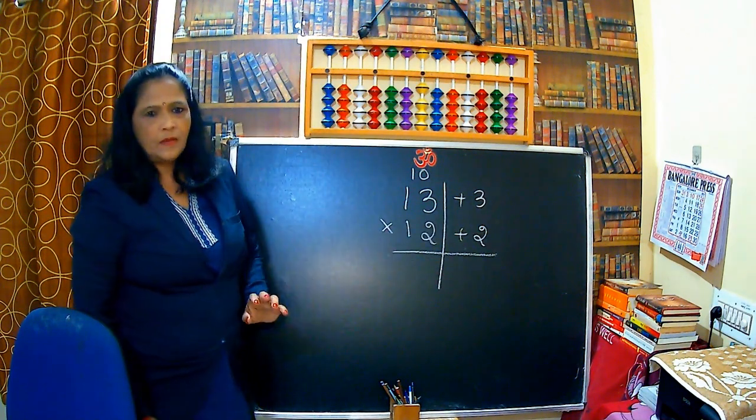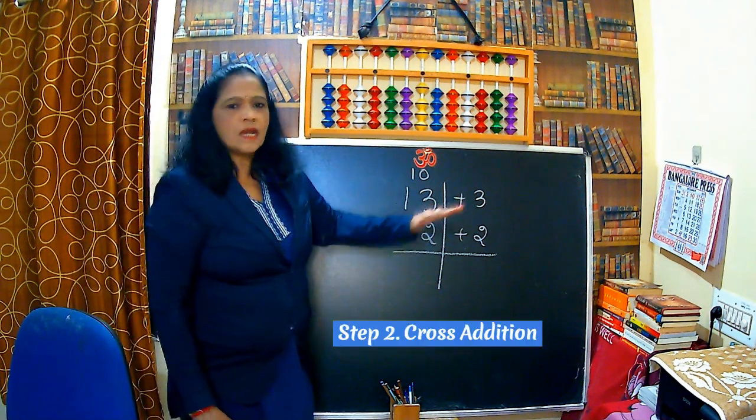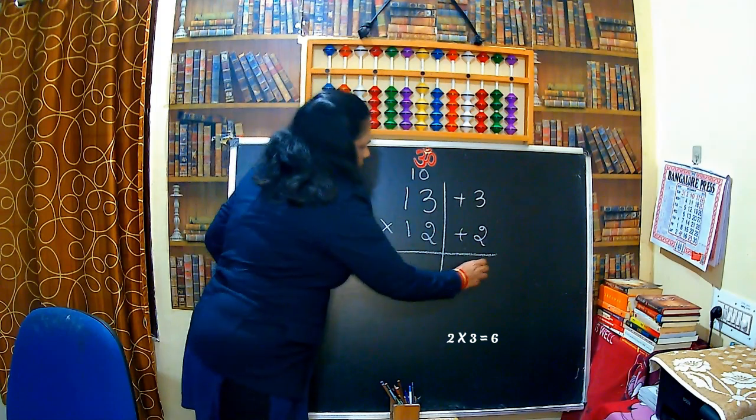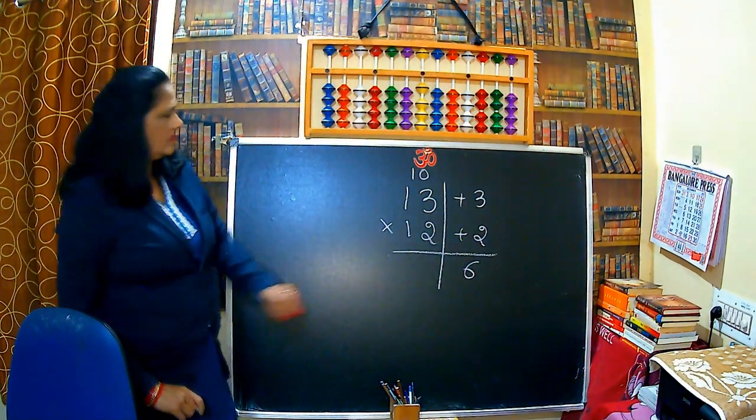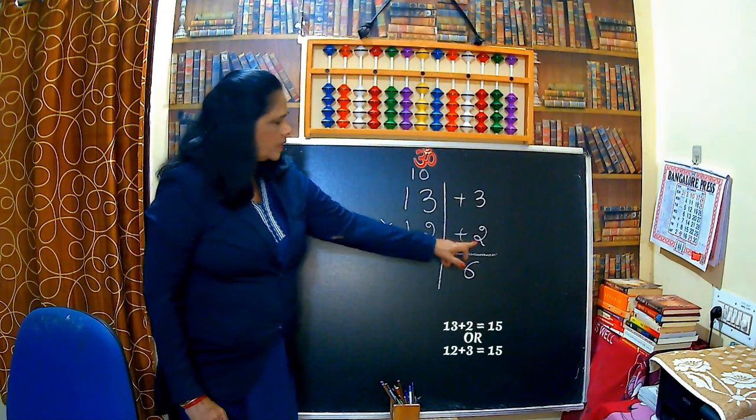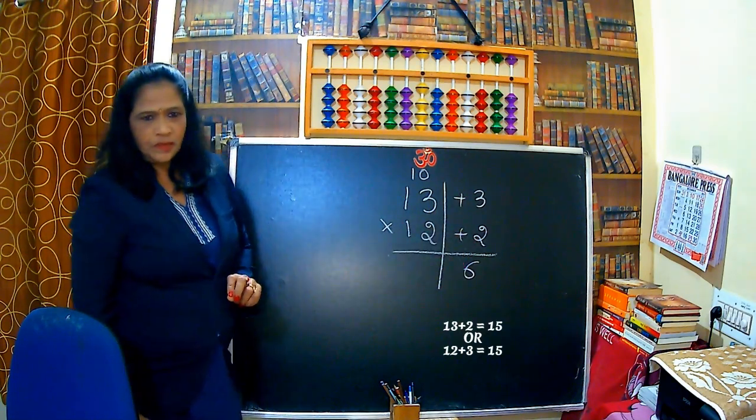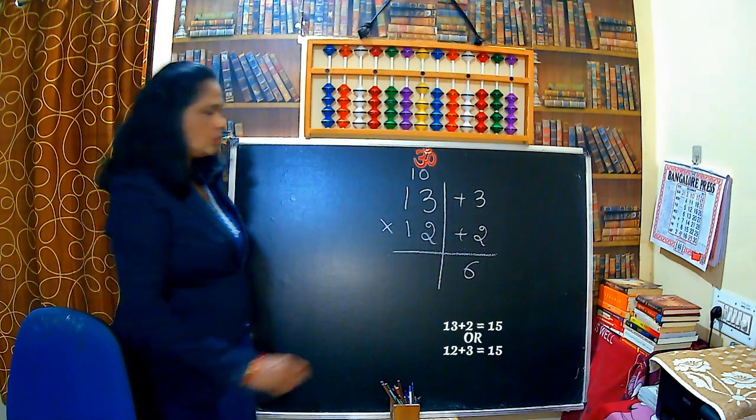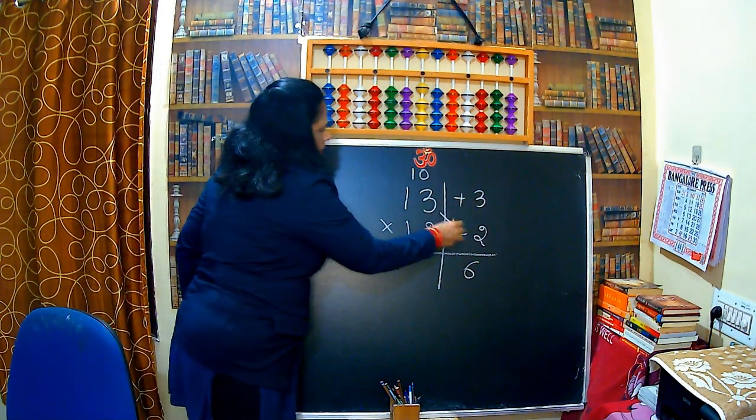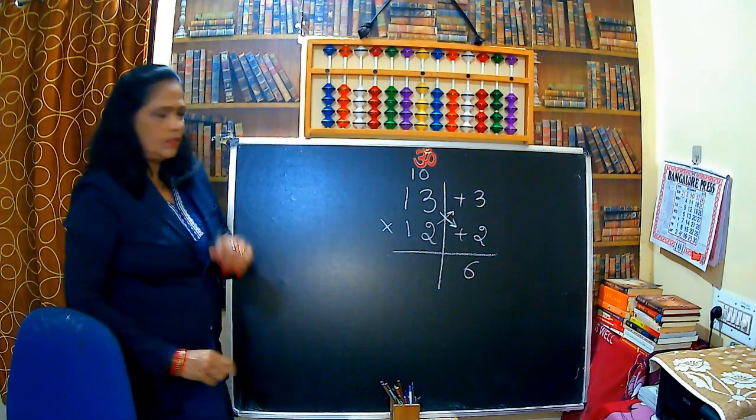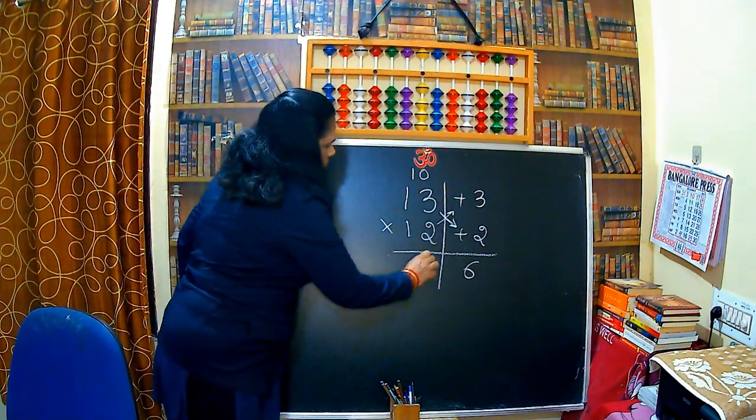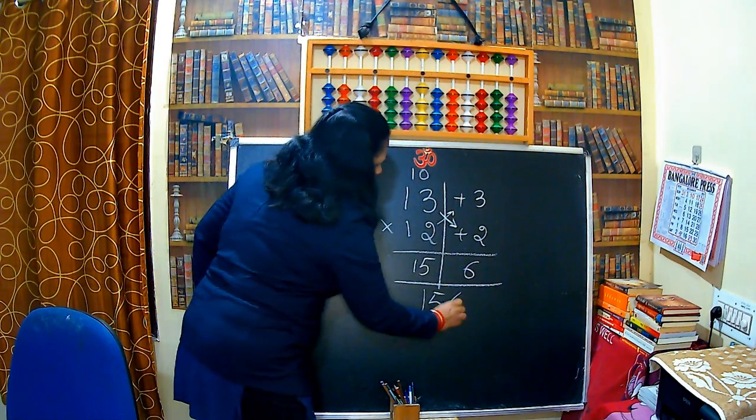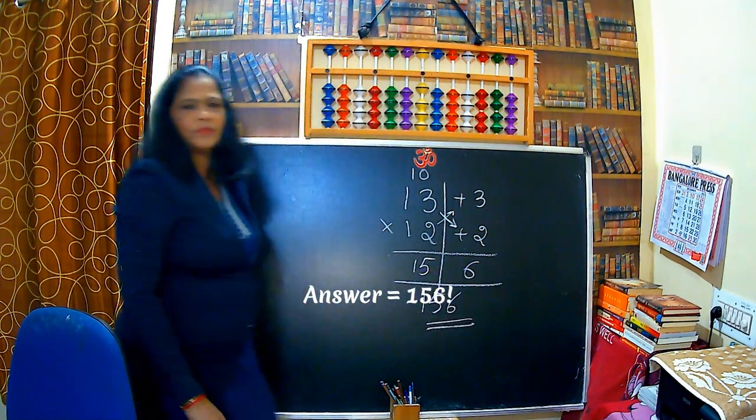Then multiply these two in the right hand side. You are going to multiply this and write. And left hand side we have to do the cross addition. 2 into 3, that is 6. Here 13 plus 2, that is 15, or if you take 12 plus 3, that is also 15. These two and these two, if you add, you get the same number, 15. So that the answer is 156.